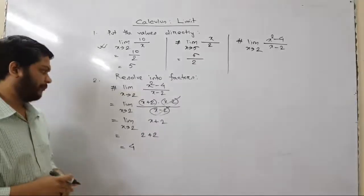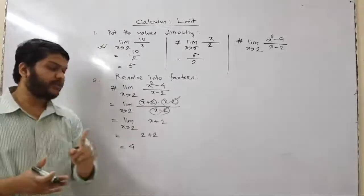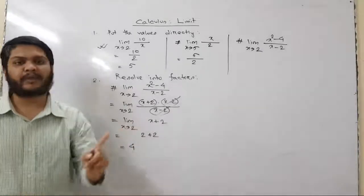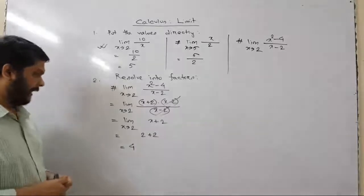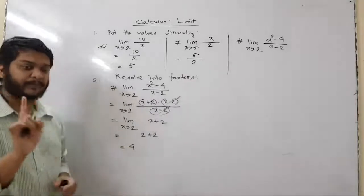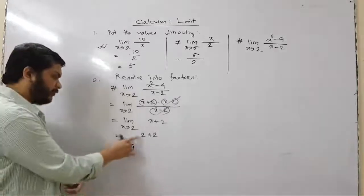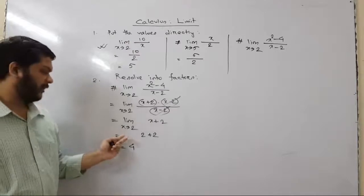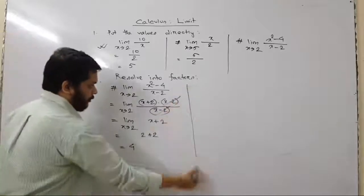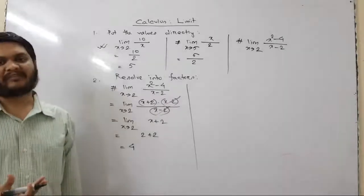Remember: put the values of the variables only at the very end of the problem. Also, when you substitute in the final line, you should not write the limit notation anymore, since we have already applied the values. Keep these points in mind. Now let me give you another example to try on your own: limit as x tends to 3 of (x² - 9) divided by (x - 3).